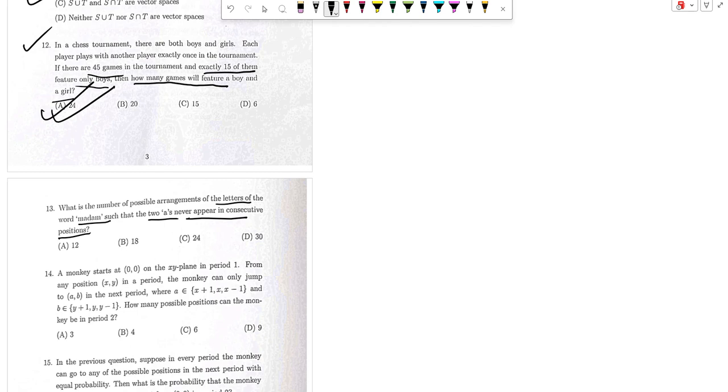So permutation combination again. So madam, how many ways? 5 factorial divided by 2 factorial and 2 factorial. That's 120 divided by 4, so 30.